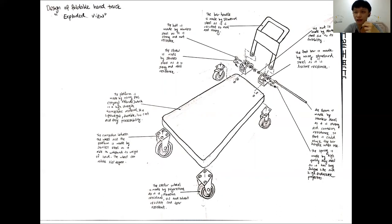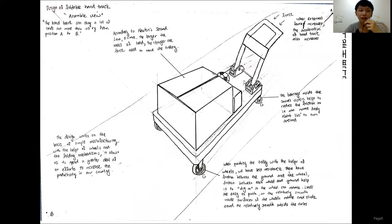The foot bar is made by using the standard steel, as it is fracture resistant. The nut is made by the stainless steel. And the bar handle is also made by the stainless steel because it will not rust and it is strong. The bolt is made by the stainless steel and screw also made by the stainless steel.